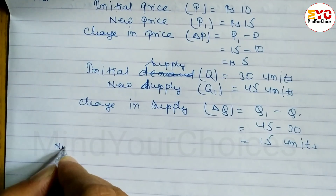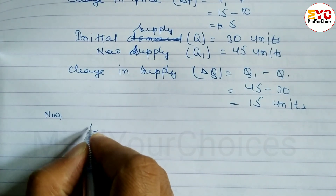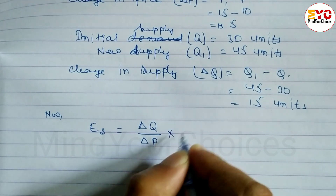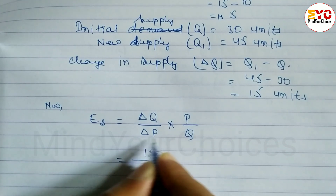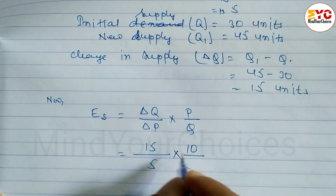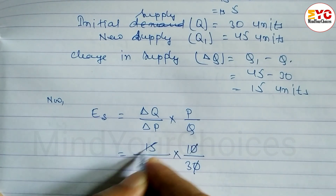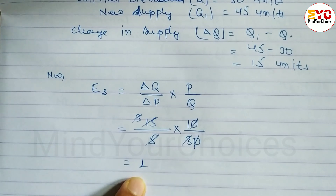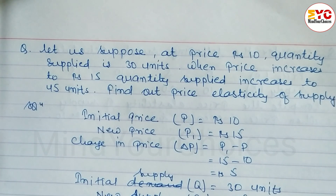Now we find the price elasticity of supply ep using the formula: ΔQ divided by ΔP multiplied by P divided by Q. Change in supply is 15, change in price is 5, initial price P is 10, and initial quantity Q is 30. Calculating: (15/5) × (10/30) equals 1. So elasticity of supply is equal to 1, which is known as unitary elastic supply.